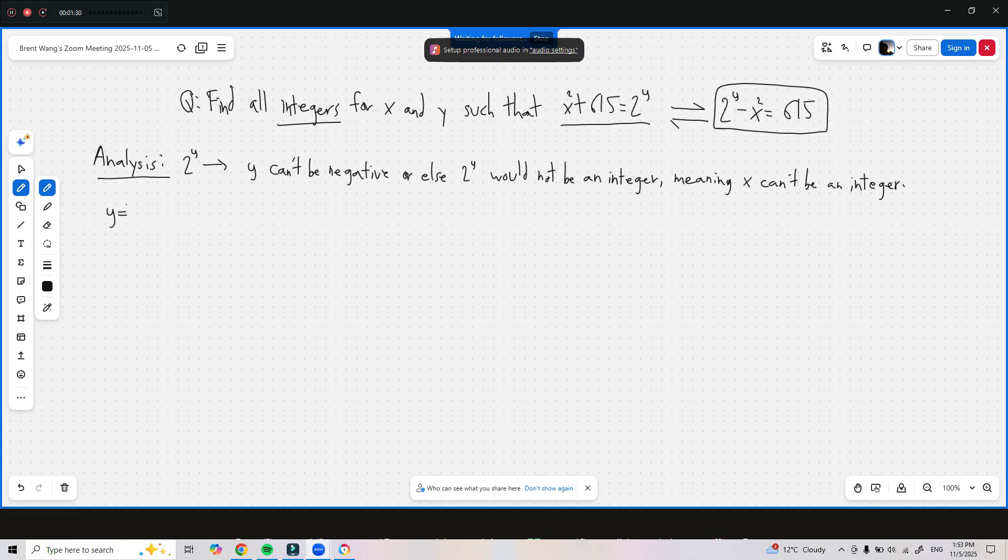And we're asked to find integer solutions for x and y, so that's not possible. y also cannot equal 0, because if it did, then you'd have 1 minus x squared is equal to 615. x would have to be an imaginary number, but we're looking for integers. y also cannot equal 1, because then you'd have 2 minus x squared is equal to 615, negative x squared equals 613. You get an imaginary number too.